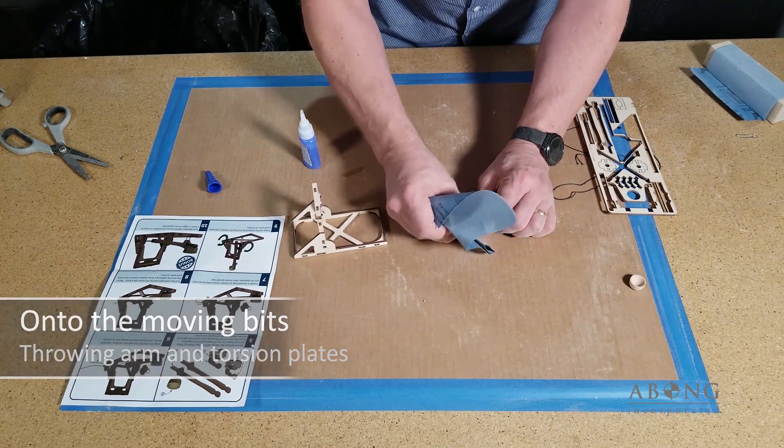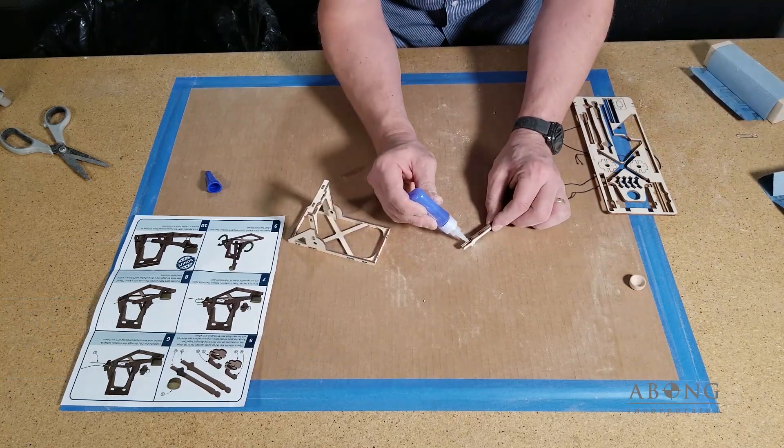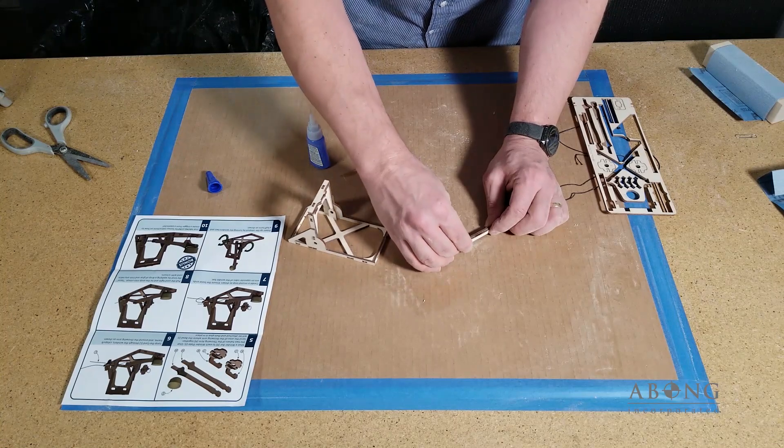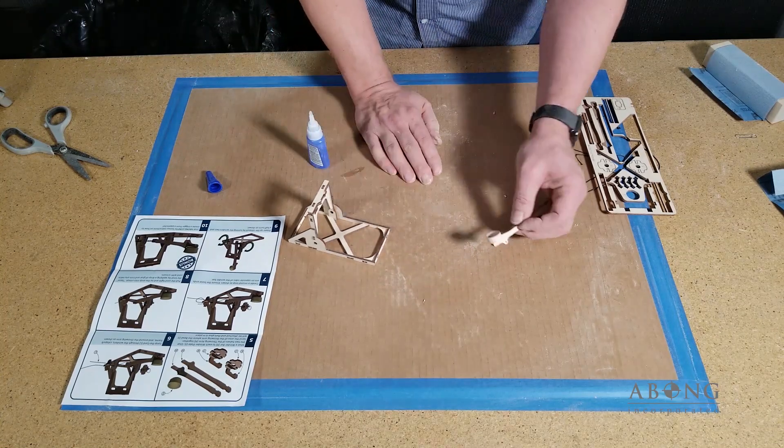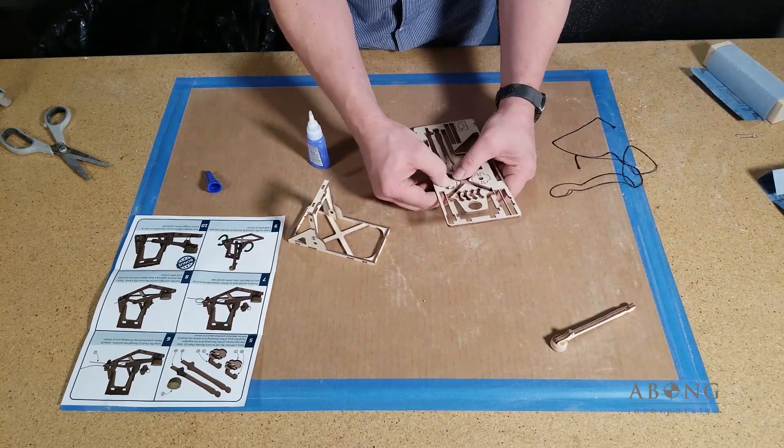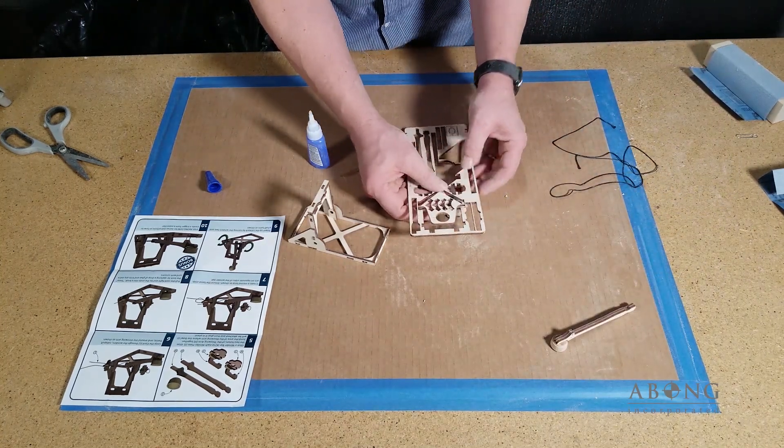Because this is where a lot of the stress gets taken up when you fire your catapult. So you press that in place. Make sure everything's snug. And we'll go ahead and do the torsion, the winders.